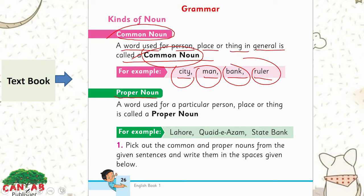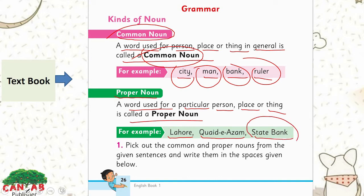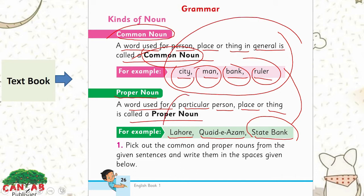And what are proper nouns? A word used for a particular person, place, or thing is called a proper noun. For example, Lahore is a particular city, Quaid-e-Azam is a particular person, and the State Bank is a particular bank. So if we compare them both, you can see the difference — these are general things, and these are specific.